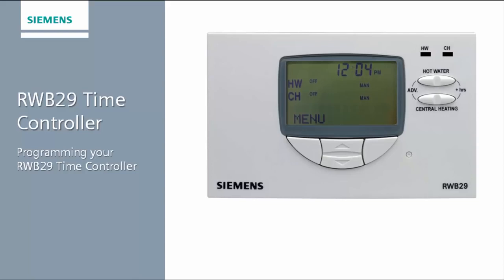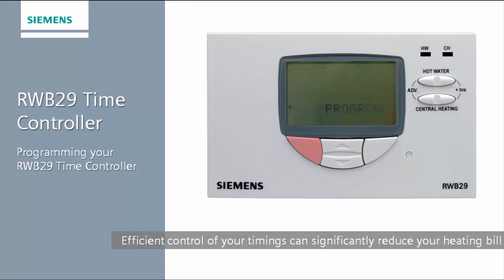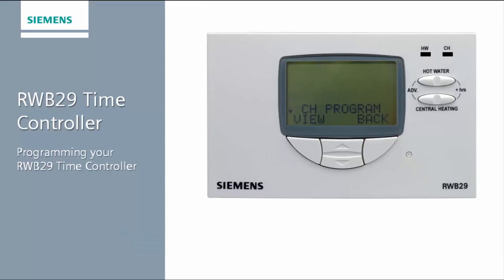We have now successfully modified the times for your program. If you wish to confirm the program times have changed, you can use the review program option in the main menu. To navigate, press menu, then press the down button until review program appears on the screen and then press select. You can now use the up arrow to confirm or review the times that are stored for the programs. If you would like to alter any times, you can use the process described earlier to make the required changes.